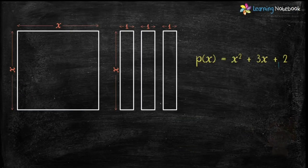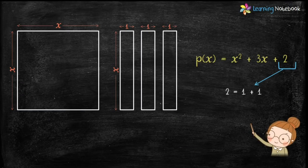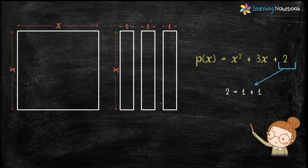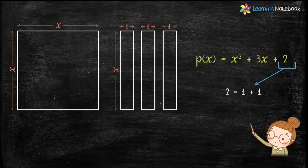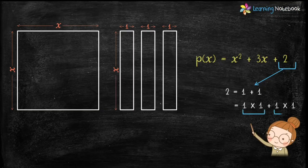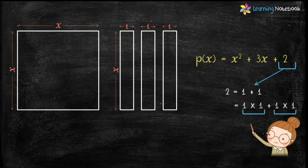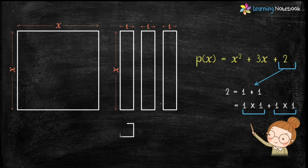Let's move on and draw the third term of the polynomial which is 2. 2 equals 1 plus 1, or we can say 2 equals 1 times 1 plus 1 times 1, and 1 times 1 is the area of a square whose side is 1. So students, let's draw 2 squares of side equal to 1.